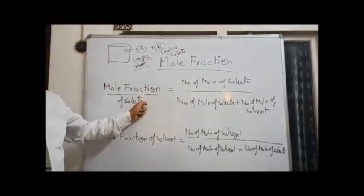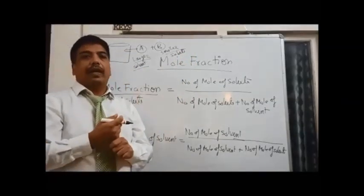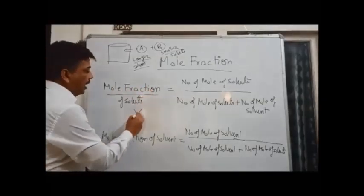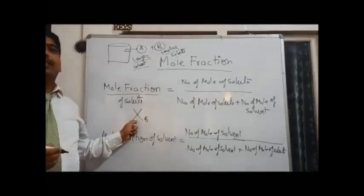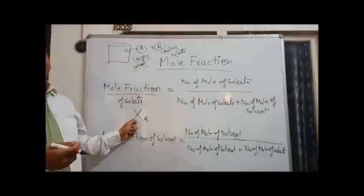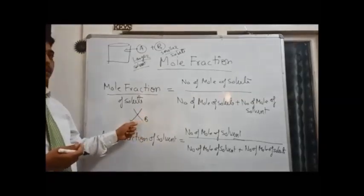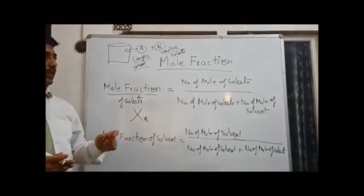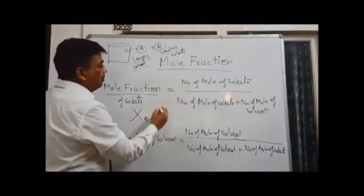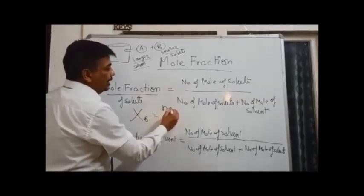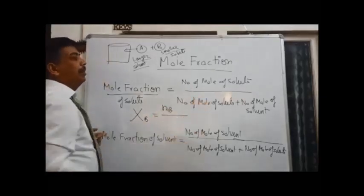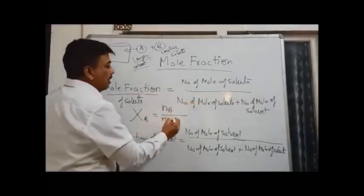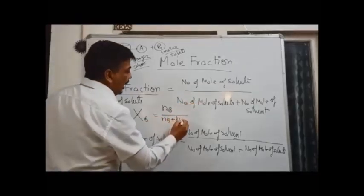If I have to write the mole fraction of solute in a much easier way, then I write X sub B. X is the sign — people also call it chi, a Latin symbol — but you can simply write it as X. So X sub B is equal to number of moles of solute, written as N sub B, divided by number of moles of solute N sub B plus number of moles of solvent N sub A.